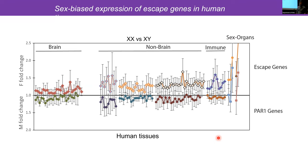Through a meta-analysis of thousands of RNA-seq experiments, you can see that escape genes show female-biased expression in brain, non-brain, immune system tissues, and sex organs, while PAR genes show male-biased expression due to the spread of X inactivation into the PAR region. Each point on this graph is a tissue type, and the dots consist of expression from 89 different escape genes. This analysis was done by D. Nguyen in our lab.